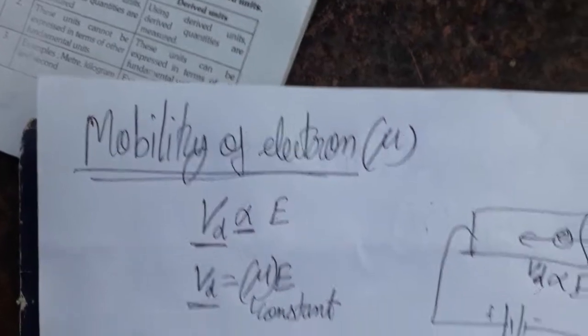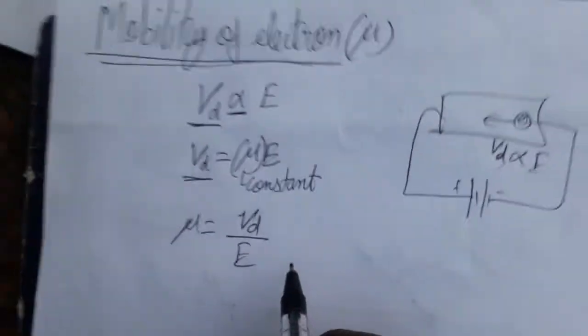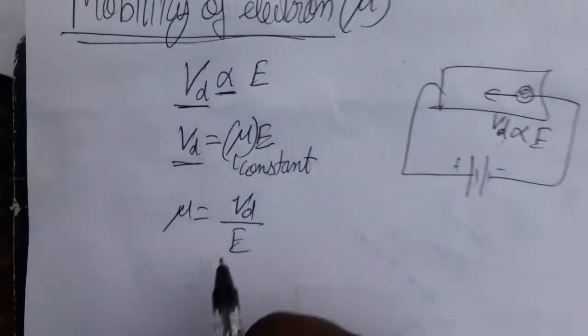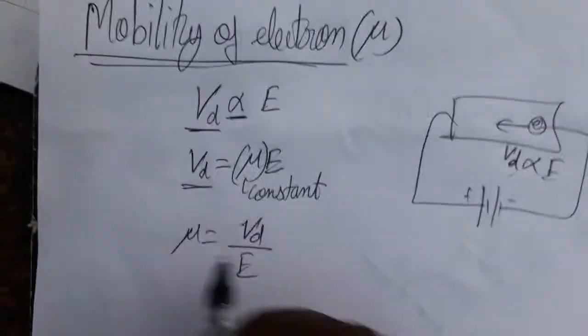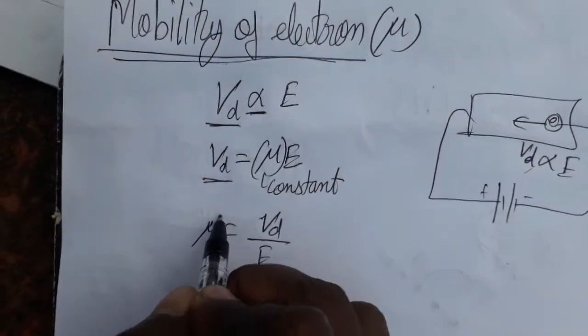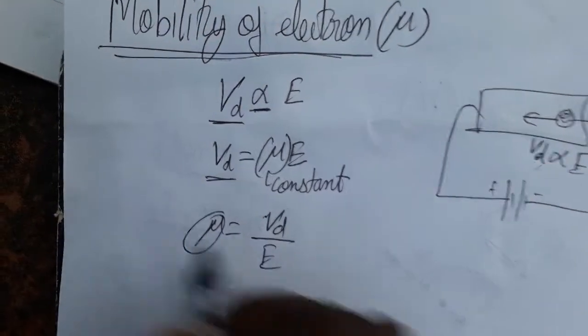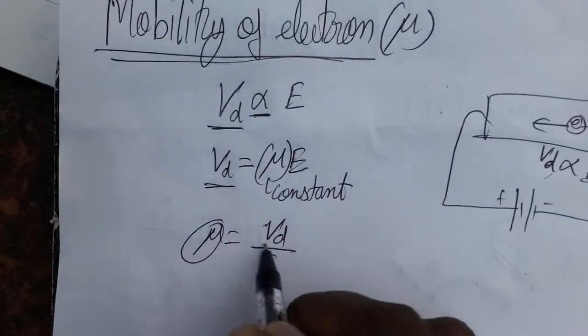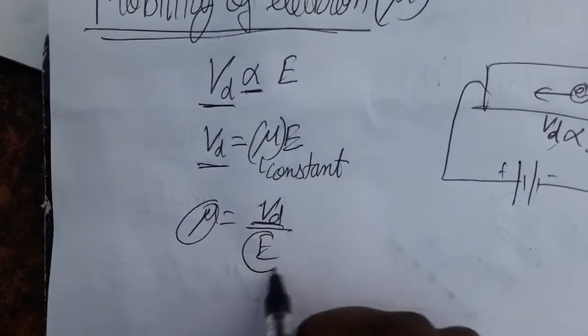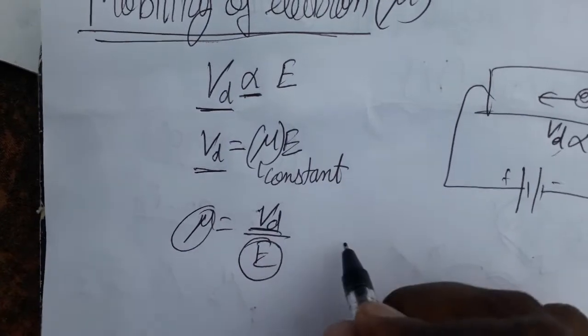Note: this is only for mobility of the electron — we are not going to consider the proton's mobility here. So mu (μ) is equal to Vd divided by E, where Vd is the drift velocity and E is the electric field.